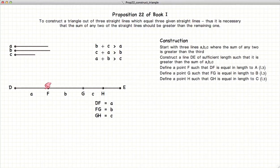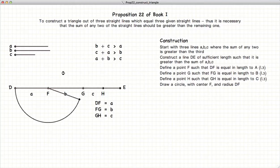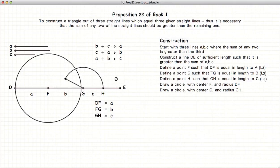Now we will draw a circle with F as the center and DF as the radius. We will now draw a circle with G as the center and GH as the radius.